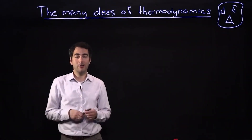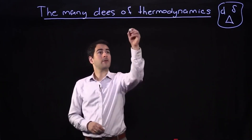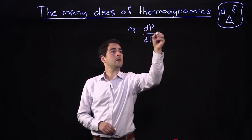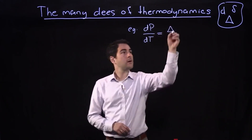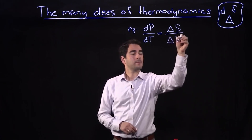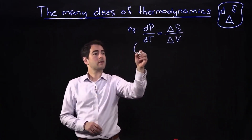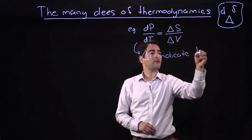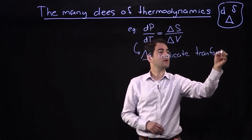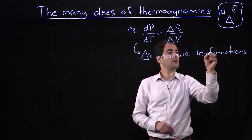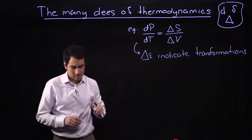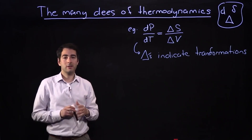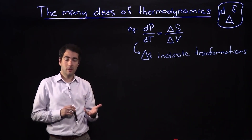This brings us to the third d, the capital Greek delta. In the context of the Clausius-Clapeyron equation, we have dP/dT equals ΔS over ΔV. In this case, the capital delta's indicate transformations. In materials thermodynamics, the most common transformations we talk about are those that take place at constant pressure and constant temperature — that is, isobaric and isothermal transformations.